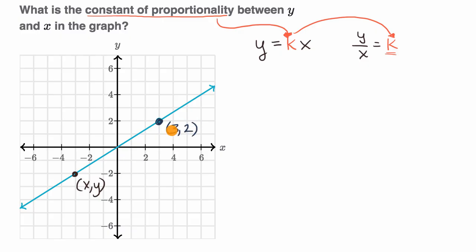And so we could set it up a few ways. We could say, look, when y is equal to two, x is equal to three. And so two would need to be equal to some constant of proportionality times three. And if you wanted to solve for this, you just divide both sides by the three. So divide both sides by three.